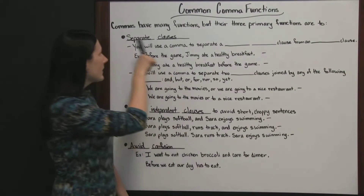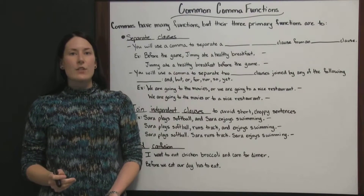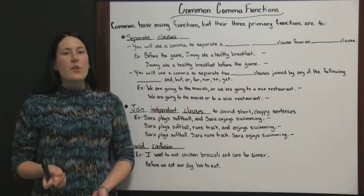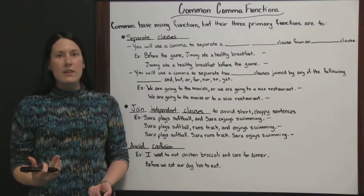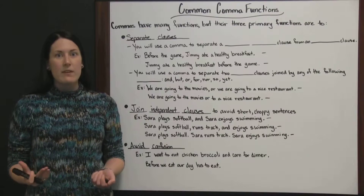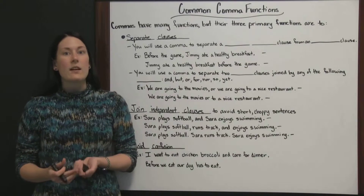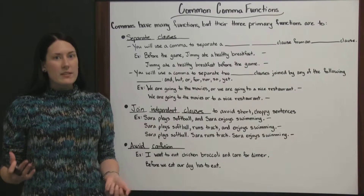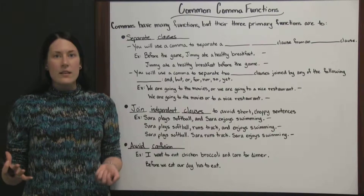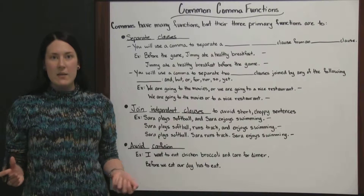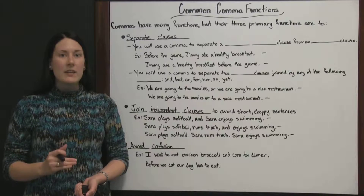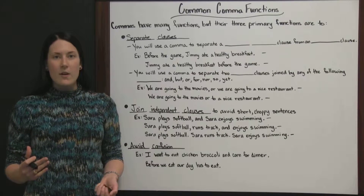Since we talked about separating and joining clauses, let's first talk about what a clause is. A clause is a piece of a sentence. If you have a dependent clause, it is dependent on the rest of the sentence — it cannot stand alone as a complete sentence; it would be a fragment. If you have an independent clause, it would be able to stand alone as a sentence. Dependent clause can't be a sentence by itself; independent clause stands alone and can be a sentence all by itself.